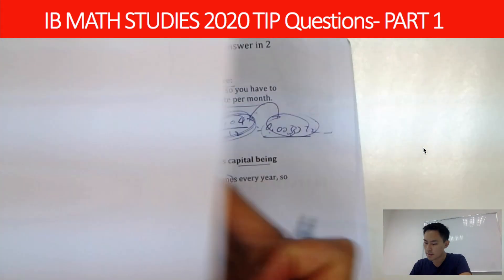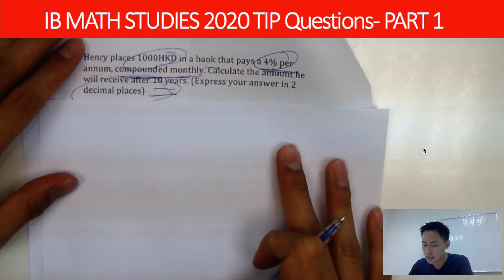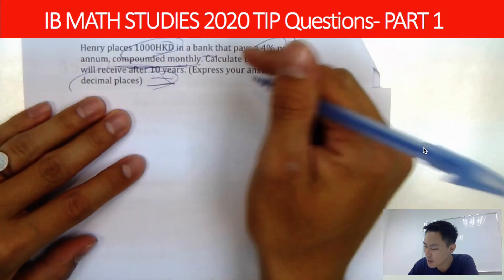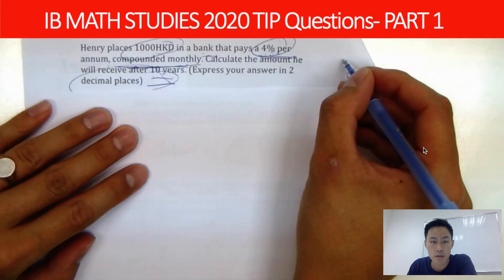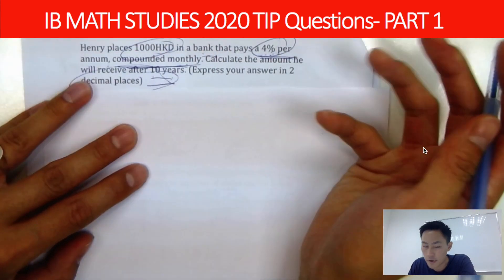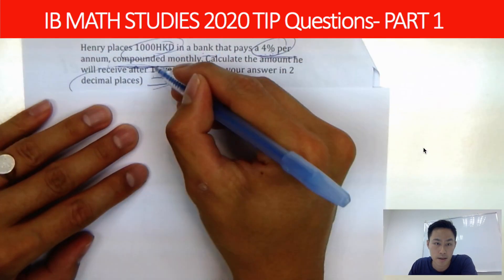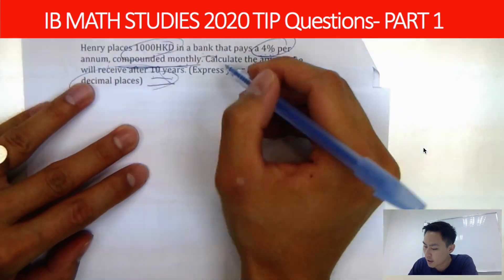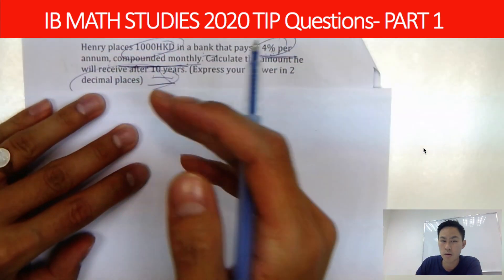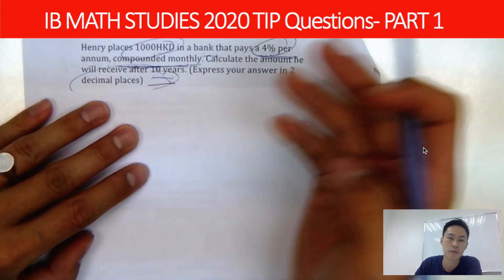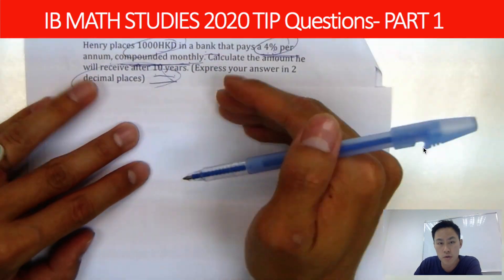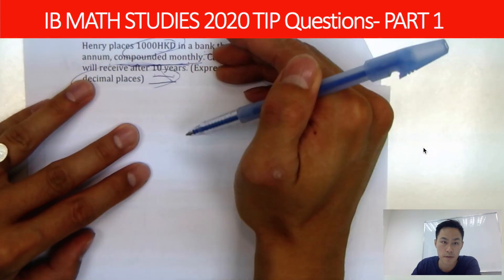The first question is about compound interest. This is something most students find quite confusing when they see a compound interest question — whenever it asks you to compound monthly or maybe compound every four years. There are only two steps to deal with compound interest.